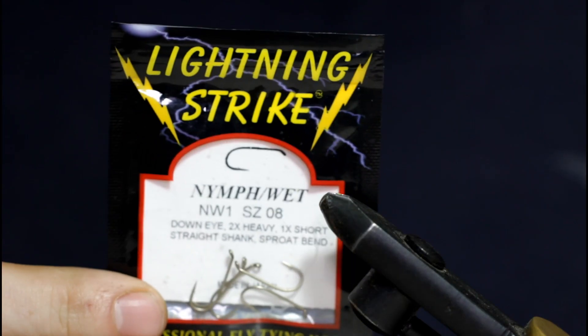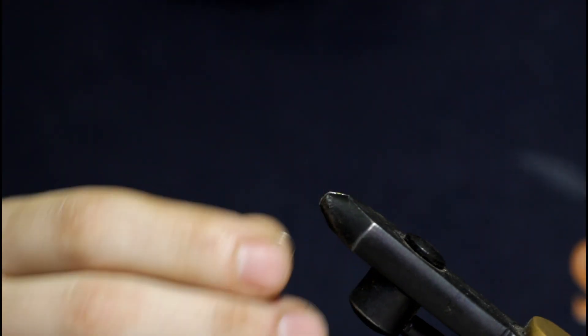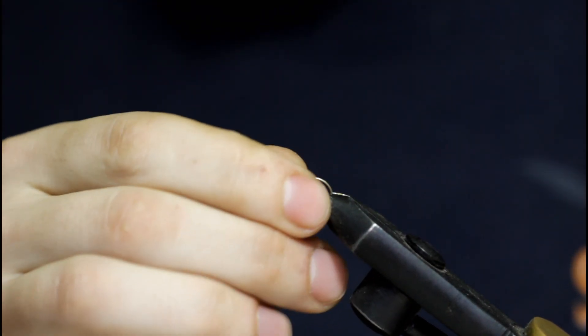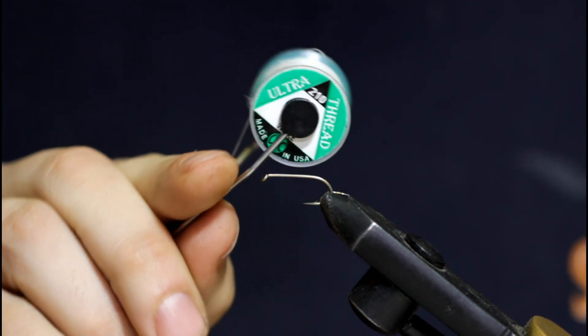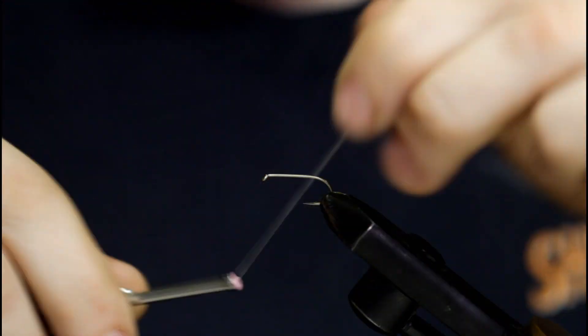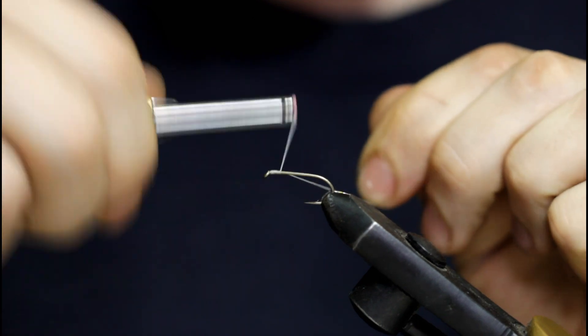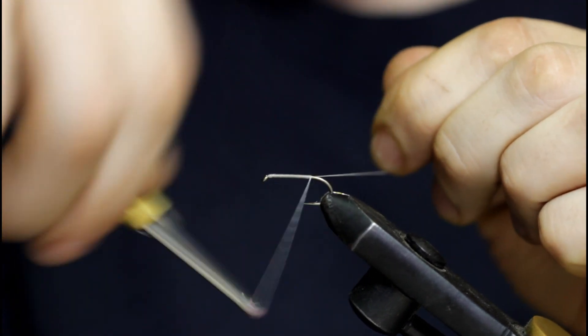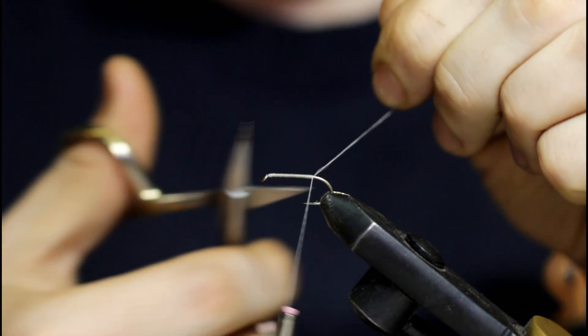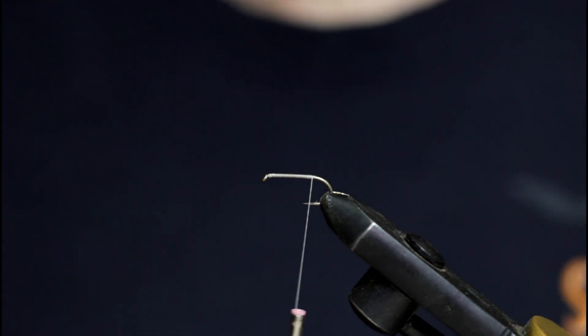Alright, let's get started. I'm going to grab my size 8 nymph wet hook, place it in the vise, and some 210 UTC thread in white. I'm going to start at the hook eye and work my way down. Grab my scissors and snip off this tag here.